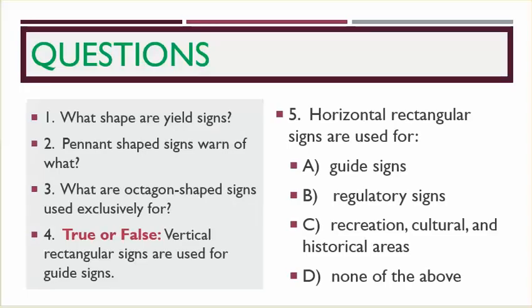Number one, what shape are yield signs? Number two, pennant-shaped signs warn of what? Number three, what are octagon-shaped signs used exclusively for?